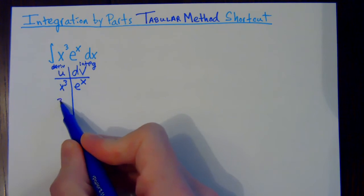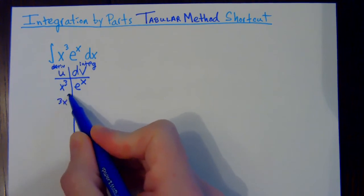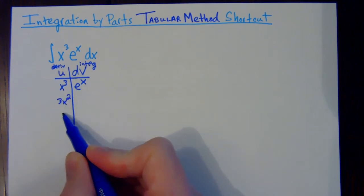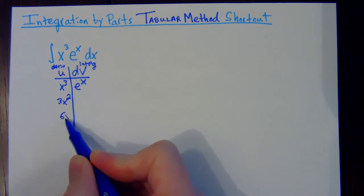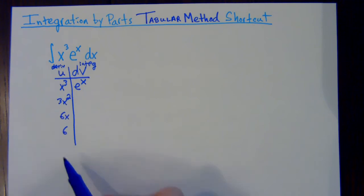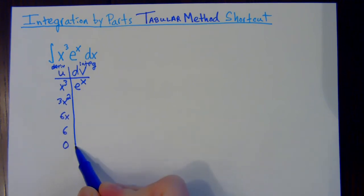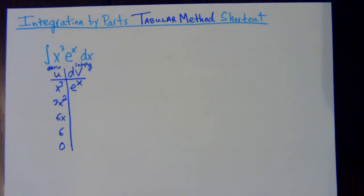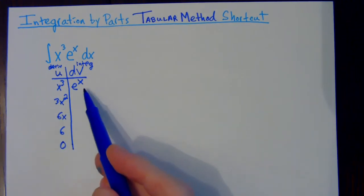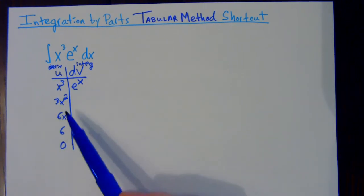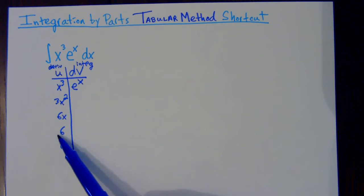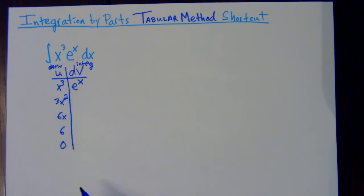You take the derivative all the way down to zero. The derivative of x cubed gives 3x squared, the derivative of that gives 6x, the derivative of that gives 6, and the derivative of that gives zero. That's what you do — take the derivative all the way down to zero. On the dv side, you integrate however many spots you have — so if you have four spots, you integrate four times.